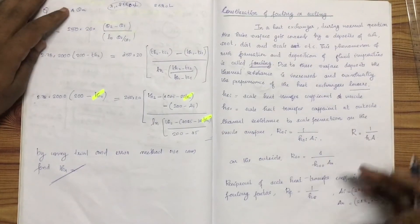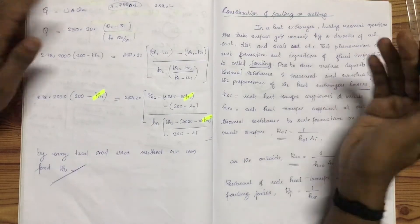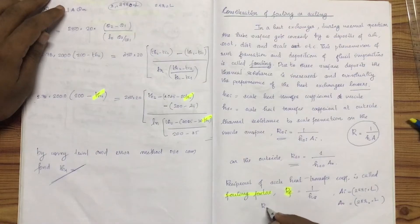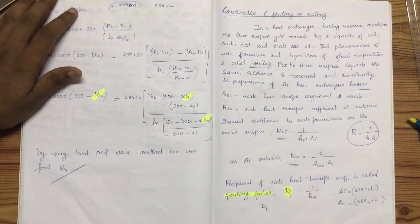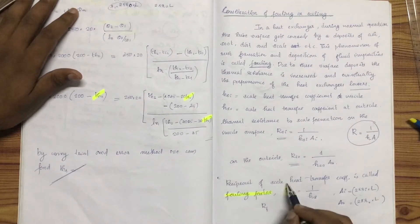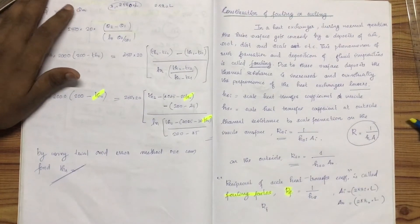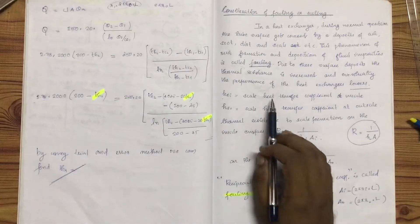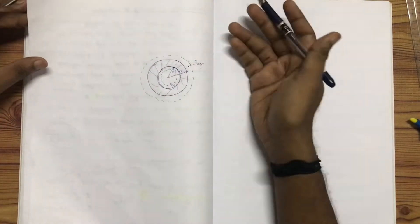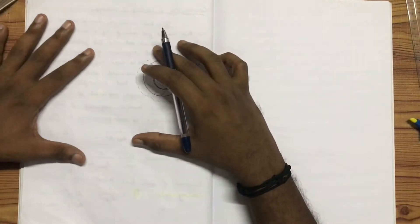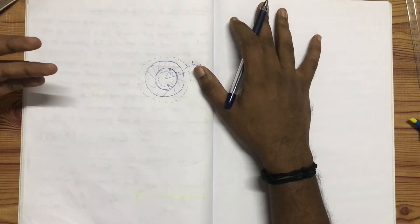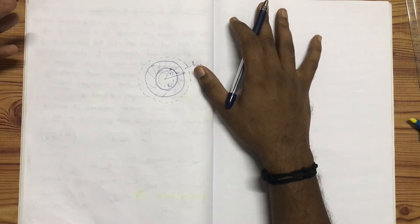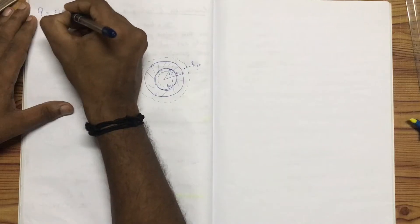What is the fouling factor? We will denote it as capital R with suffix F1 and F2, which is equal to 1 divided by h_SO. The fouling factor is the reciprocal of the scale heat transfer coefficient. We will define the overall heat transfer coefficient U so that we can use the equation q equals U·A·θm.